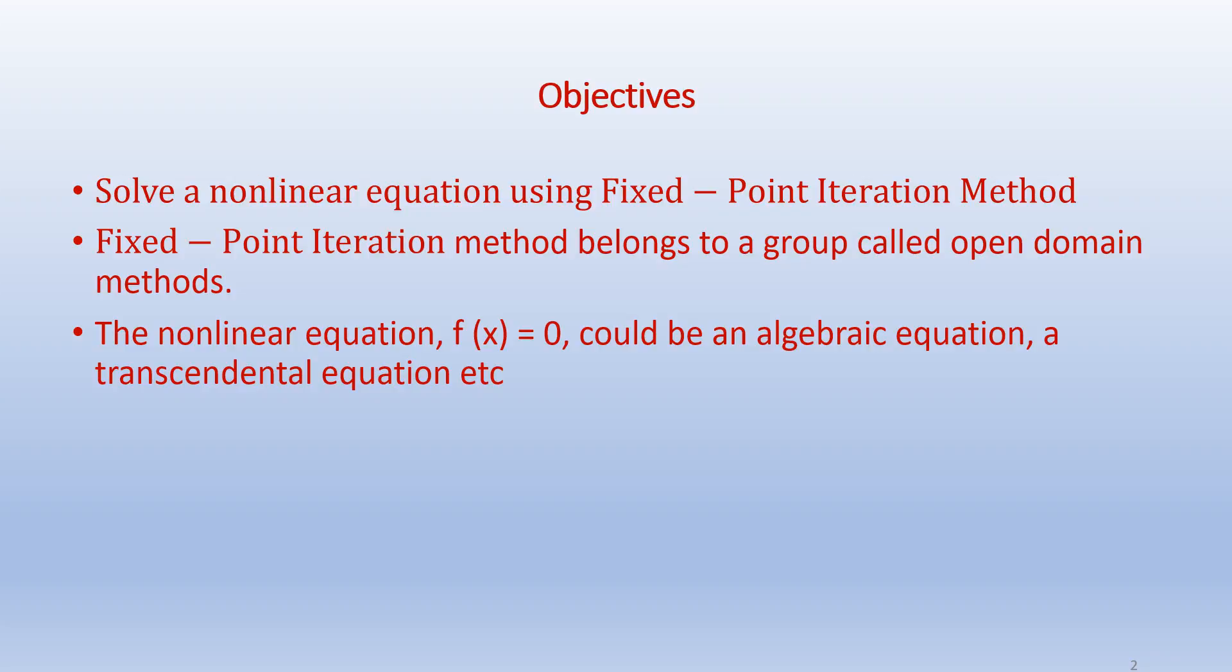In this video we are going to use Fixed-Point Iteration Method which is an open domain method to solve these nonlinear equations. The difference between an open domain method and a closed domain method is: in closed domain method we require two points and the solution is to be within these two points, so we are bracketing the solution every time. But in open domain method we start with one assumption and we try to converge our value to the solution. So sometimes open domain methods can diverge, whereas fixed domain methods or closed domain methods they don't diverge.